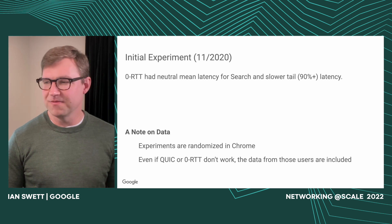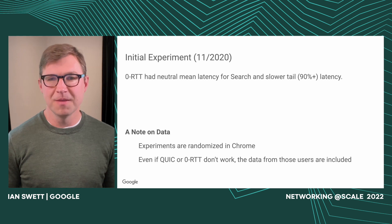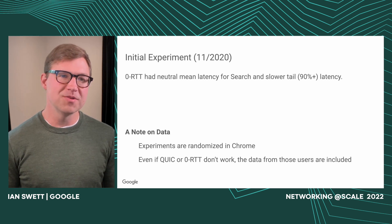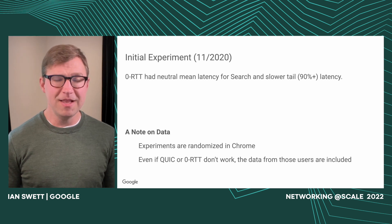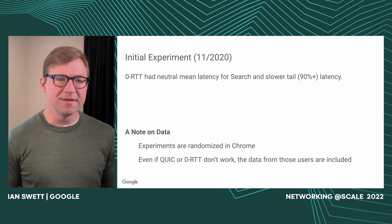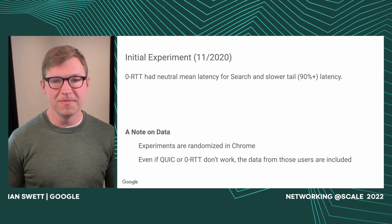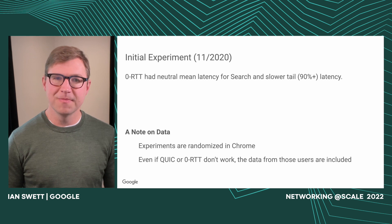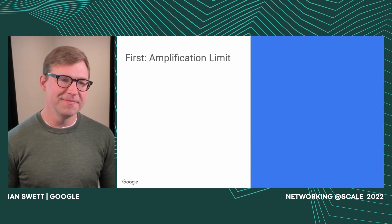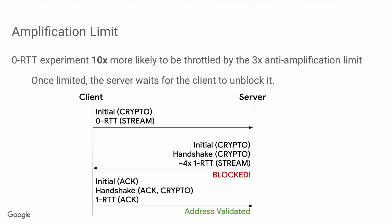In the initial experiment back in November 2020, 0-RTT was neutral at the mean for search, but had slower tail latency and some regressions on other metrics Chrome-side, including an increase in handshake timeouts. Note that the experiments are randomized in Chrome, and even if QUIC or 0-RTT don't work at all, the data from those users are included. The first issue we hit was the amplification limit. The 0-RTT experiment was 10 times more likely to be throttled by the 3x amplification limit, and once limited, the server waits for the client to unblock it, so it's just stuck there. This can delay the handshake substantially, even multiple round trips.